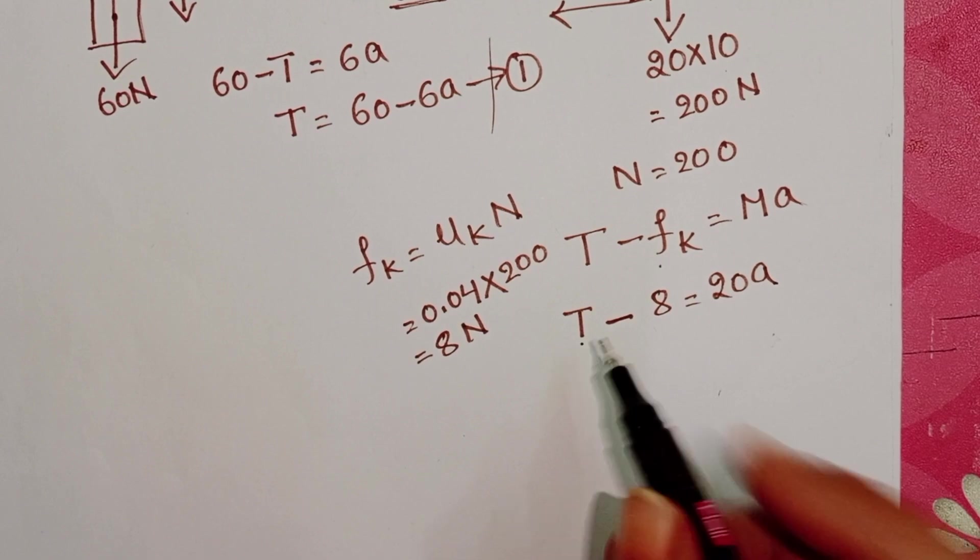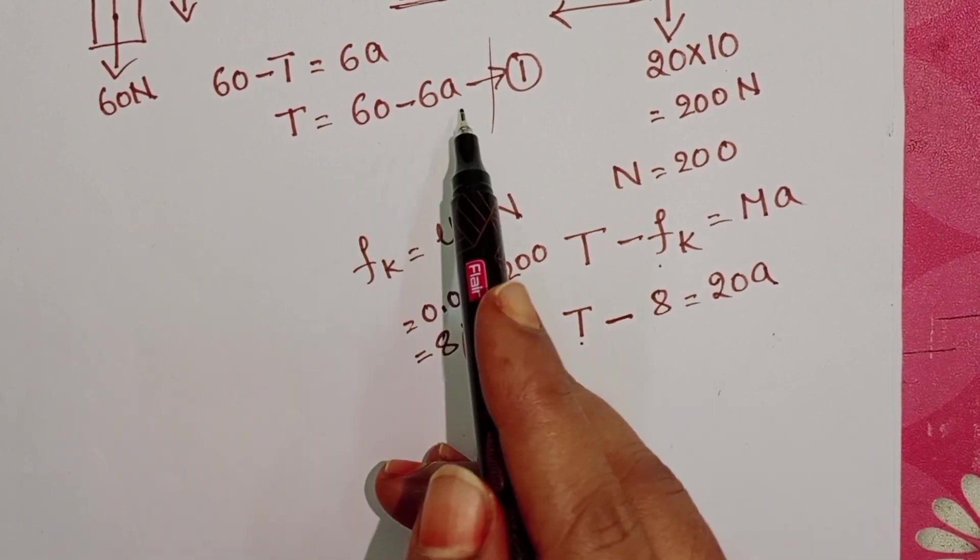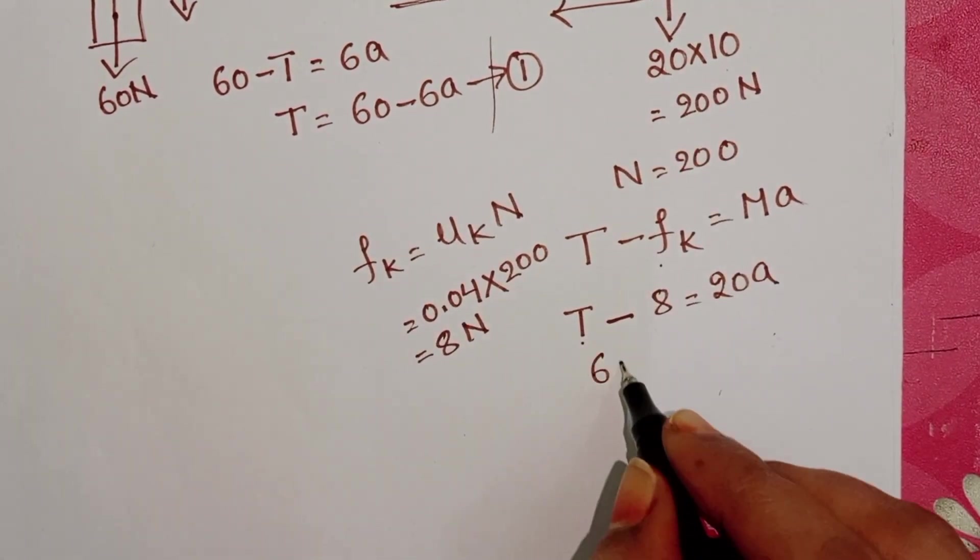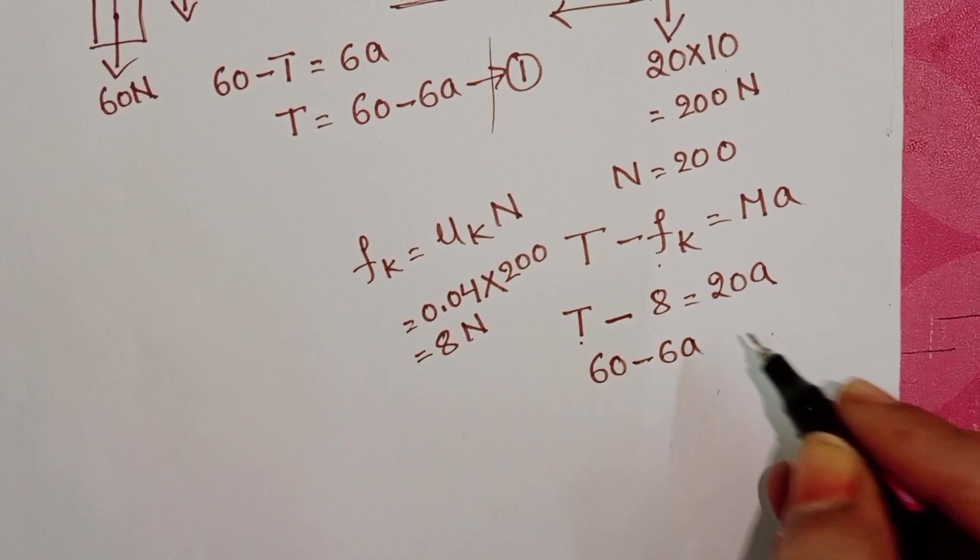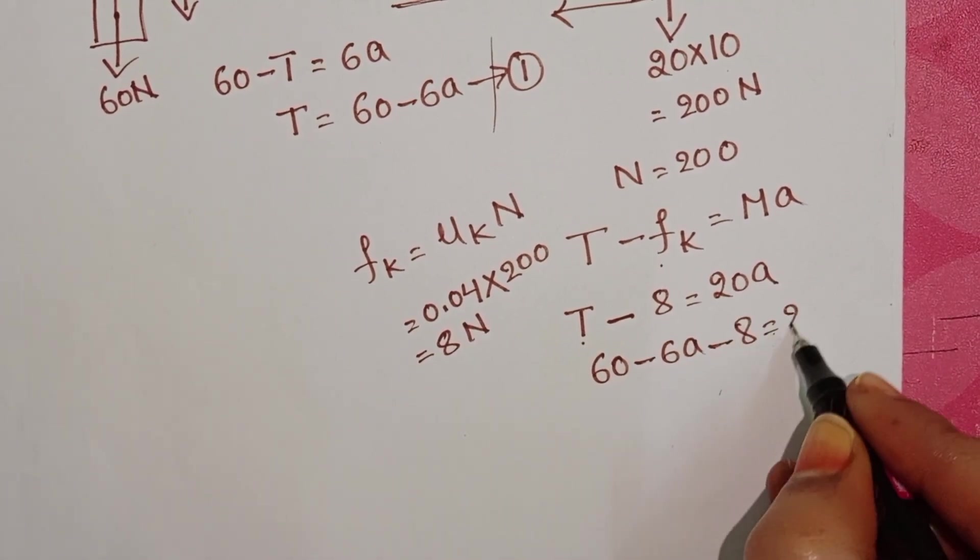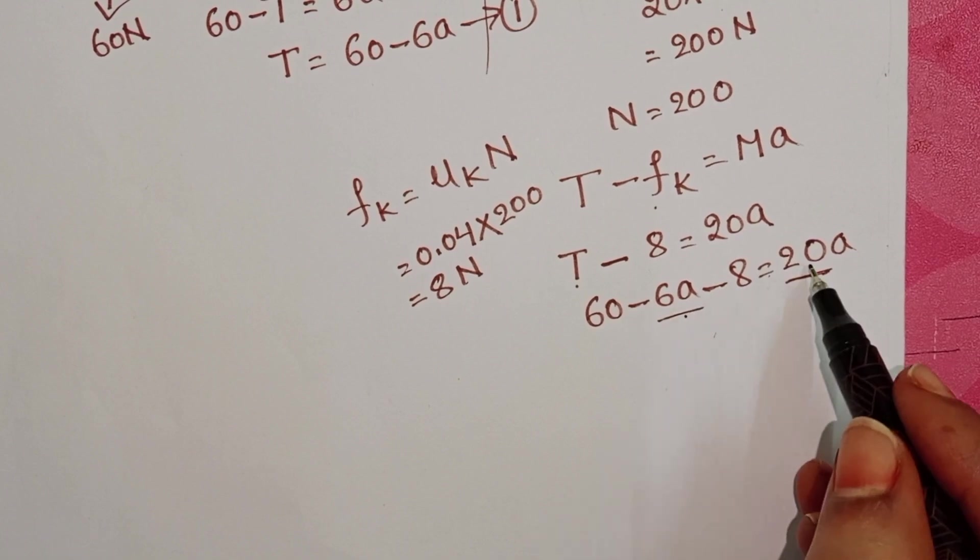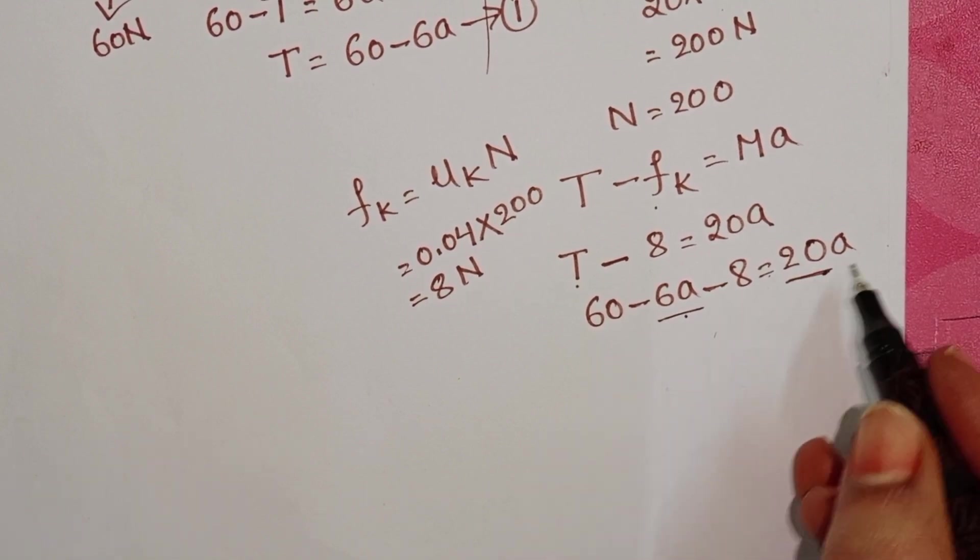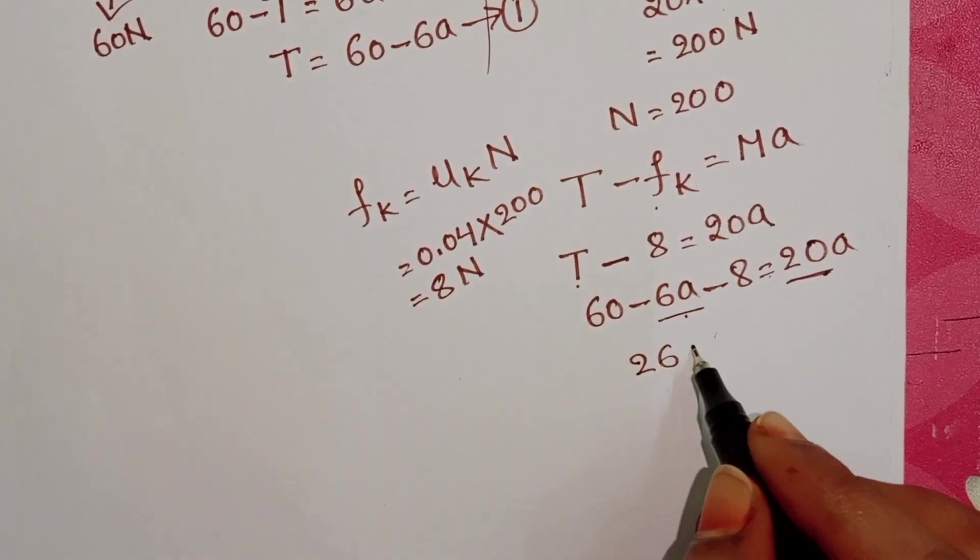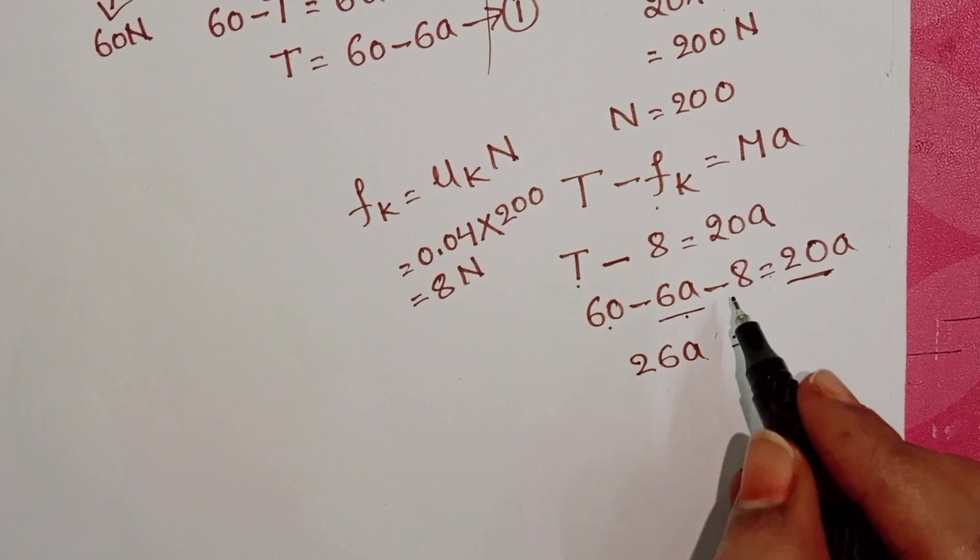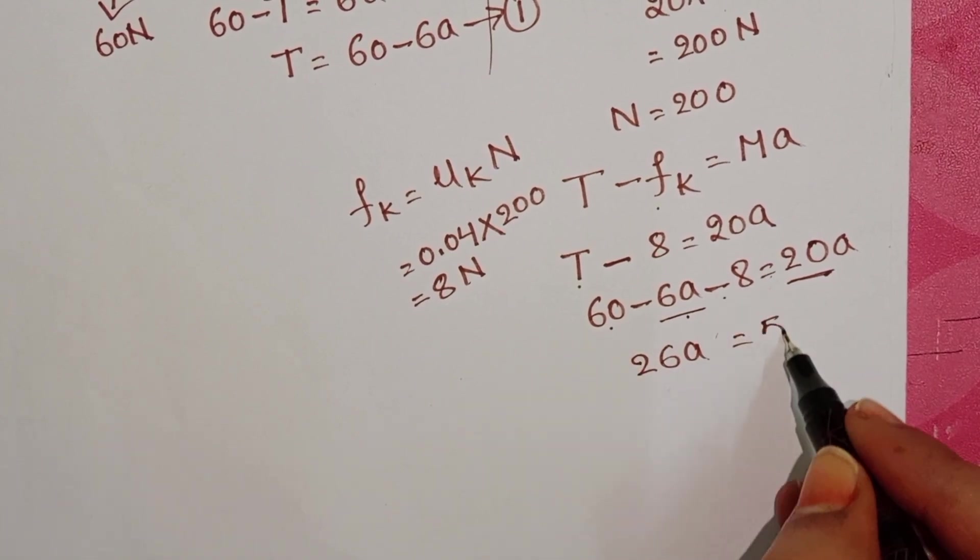In place of T, substitute 60 minus 6A. So 60 minus 6A minus 8 equals 20A. We want acceleration, so write these two terms on the LHS side: 20A plus 6A becomes 26A. 60 minus 8 becomes 52.